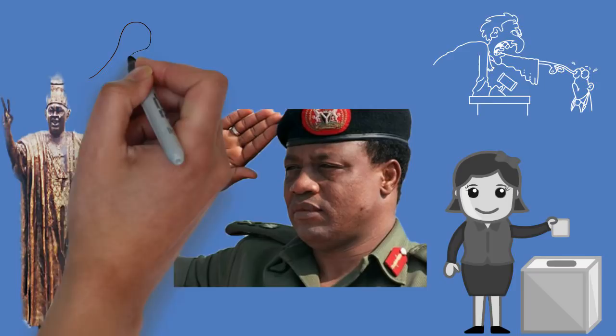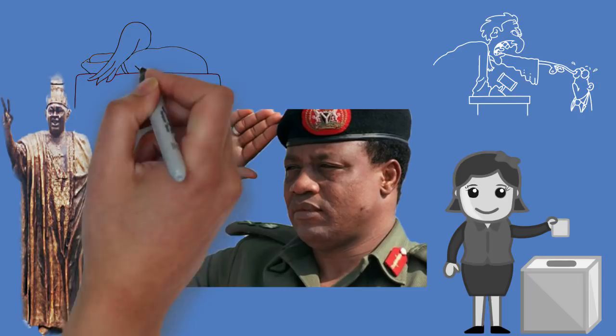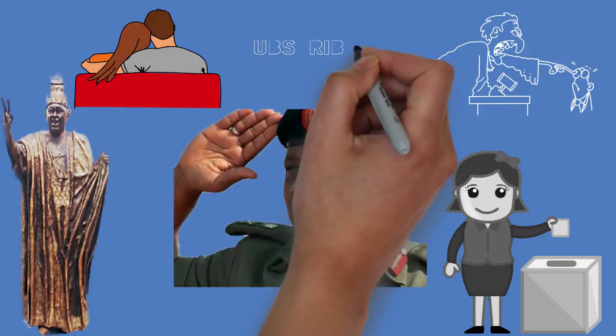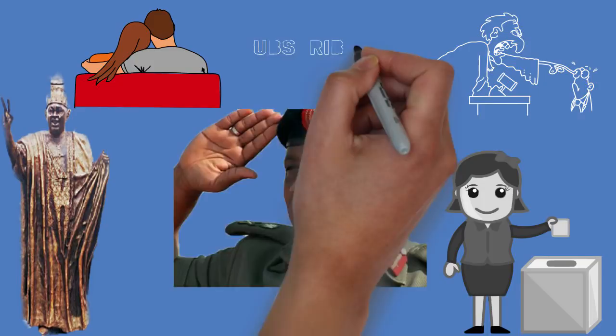Ibrahim Babangida married Miriam Babangida, first lady of Nigeria between 1985 to 1993. They had four children together: Mohamadu, Aminu, Aisha Tu, and Halimatu. Miriam Babangida died on the 27th of December 2009. Thank you.